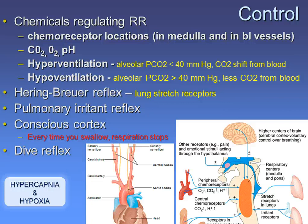When you hyperventilate, you breathe faster and blow off more CO2, so pCO2 in your alveoli goes down below normal levels. Because the gradient between pCO2 in your blood and pCO2 in your alveoli increases, more CO2 is transported from blood into the alveoli. Hyperventilation means you blow off more CO2; the opposite happens with hypoventilation.